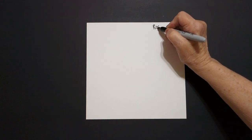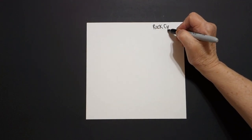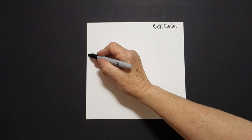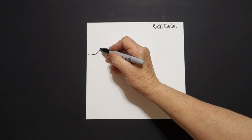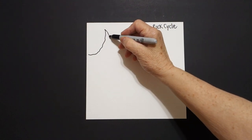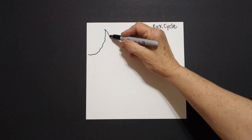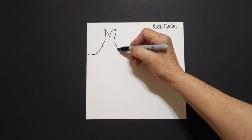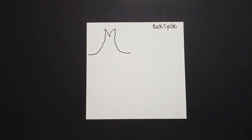Today's project is how to draw a rock cycle, and we're going to be drawing the three different types of rocks. I'm going to start over here on the left, and I'm just going to draw a wavy line up, wavy line in, wavy line out, wavy line down, and leave it floating.